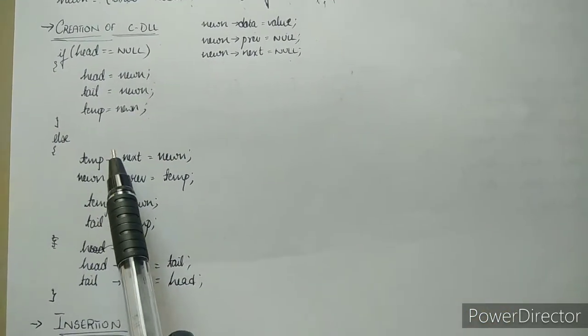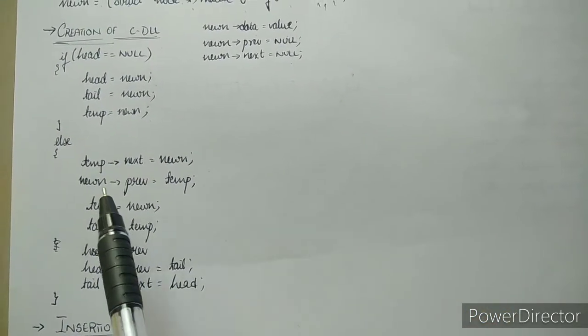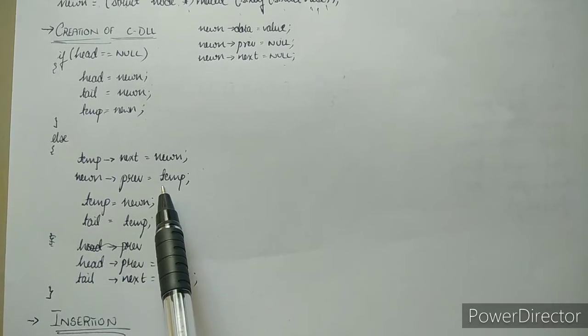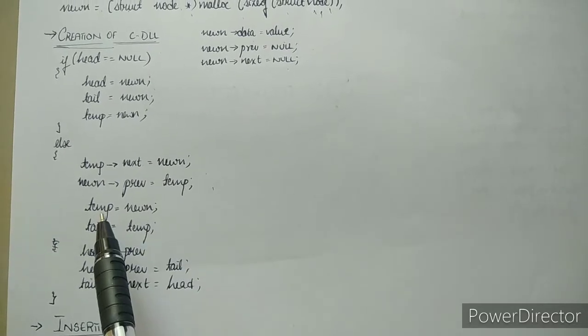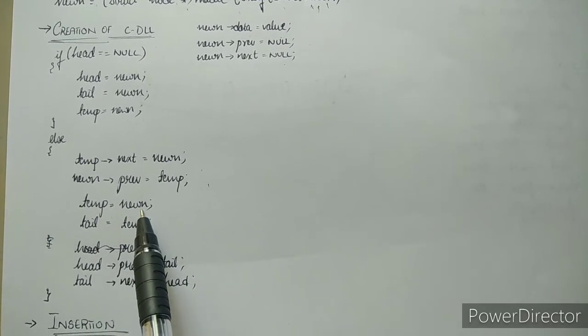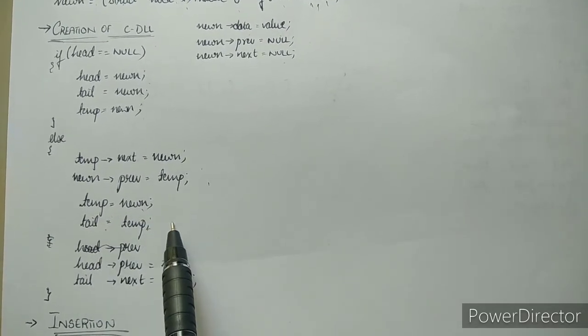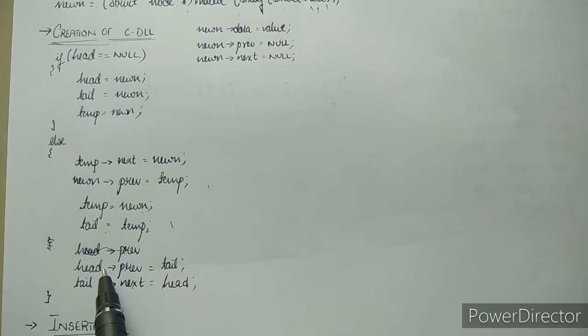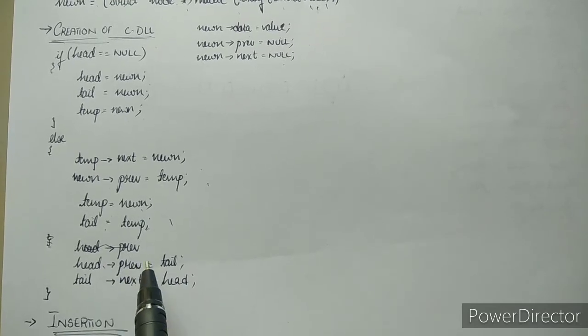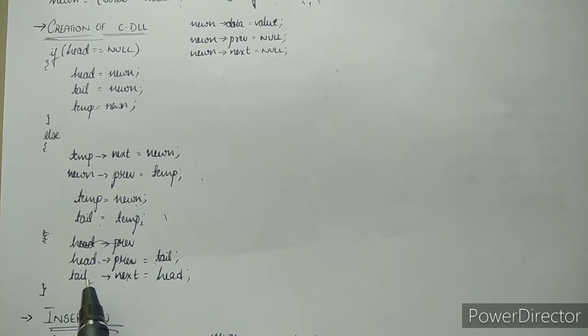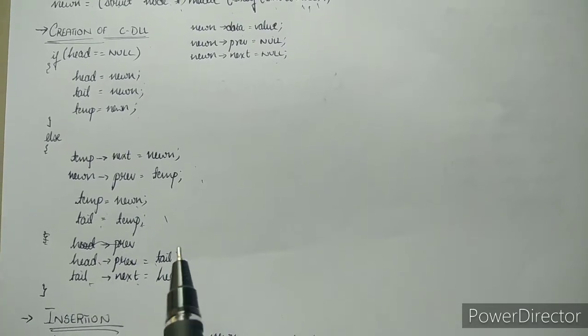Else: temp's next is new node, new node's previous is temp, temp is equal to new node, tail is equal to temp, head's previous is tail, and tail's next is head.